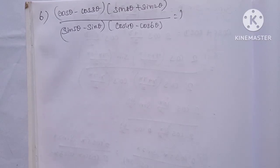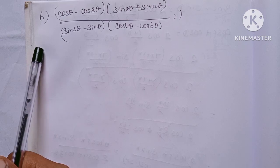Hi students, I am Veno. Let's look at Limit Mark Chapter 3 Exercise 3.6, 6 questions.